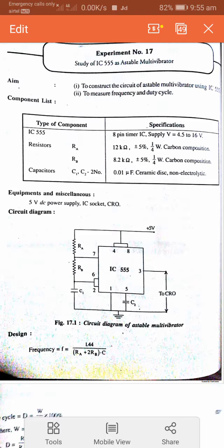Capacitors required: C1 and C2 = 0.01 µF ceramic disc capacitors. Equipment required: 5V DC power supply, IC socket, and CRO. The circuit diagram of the astable multivibrator is shown.